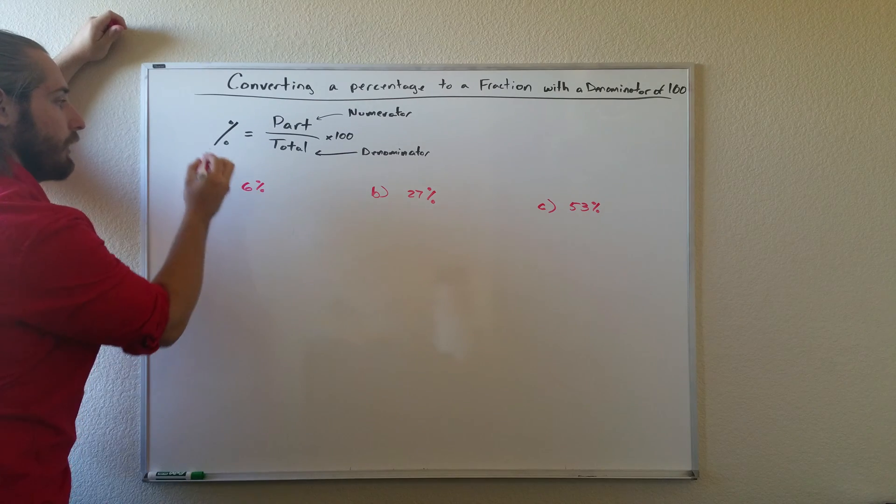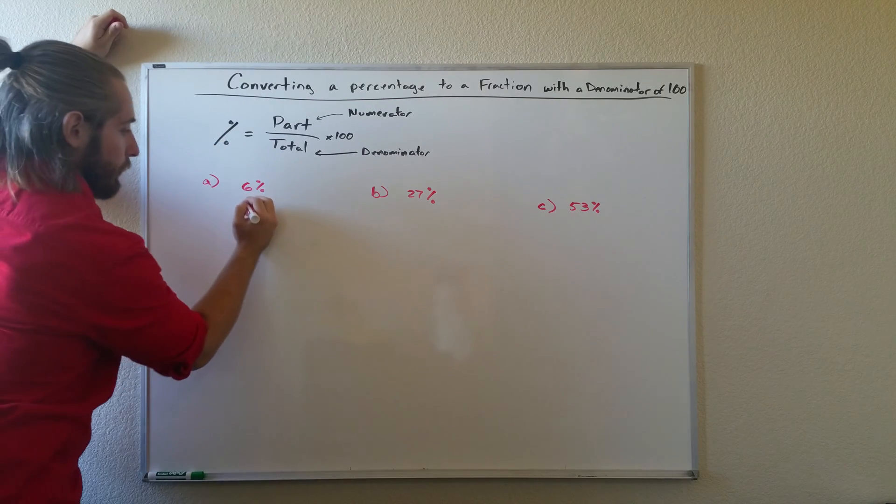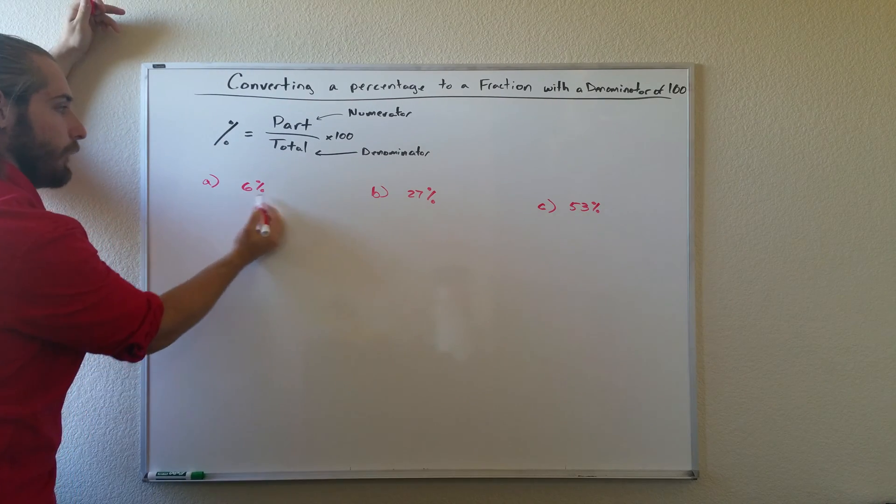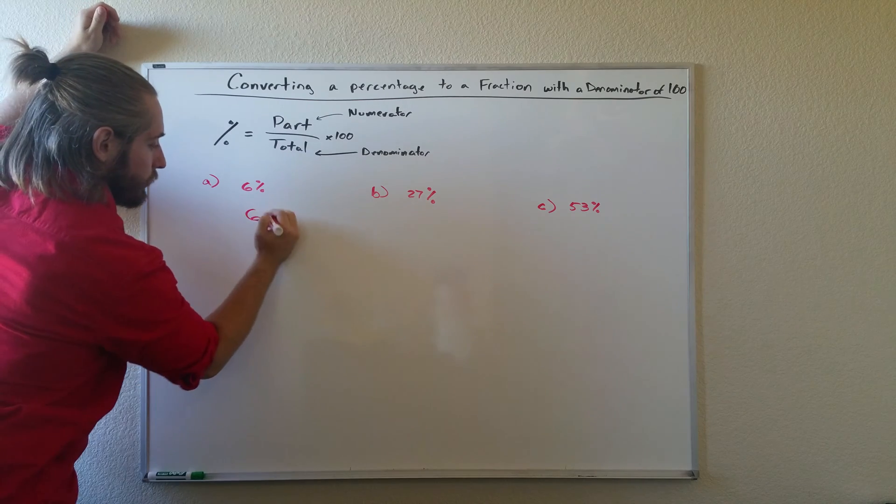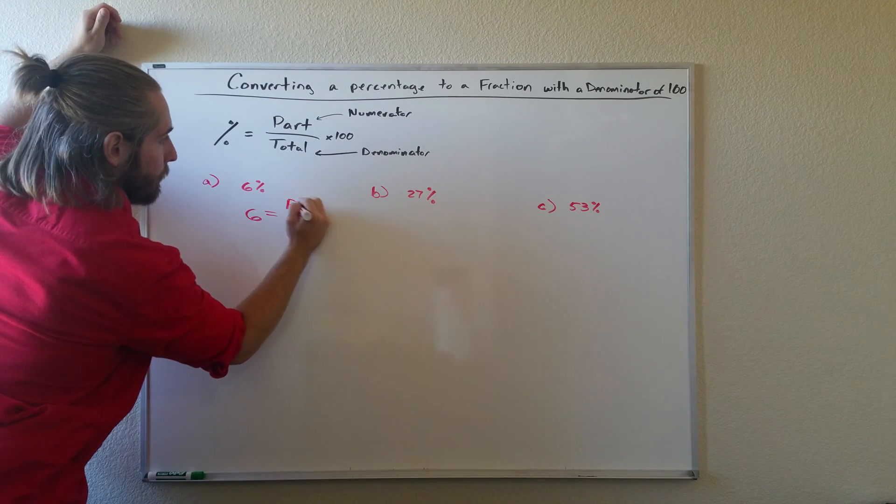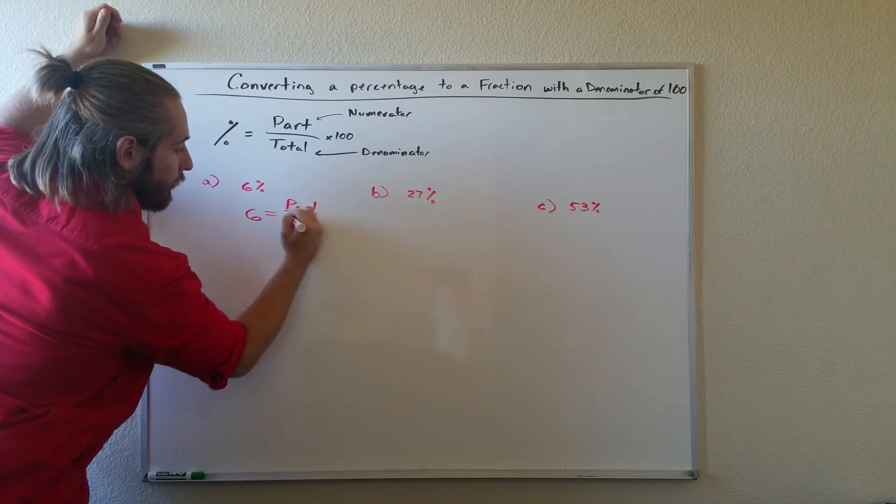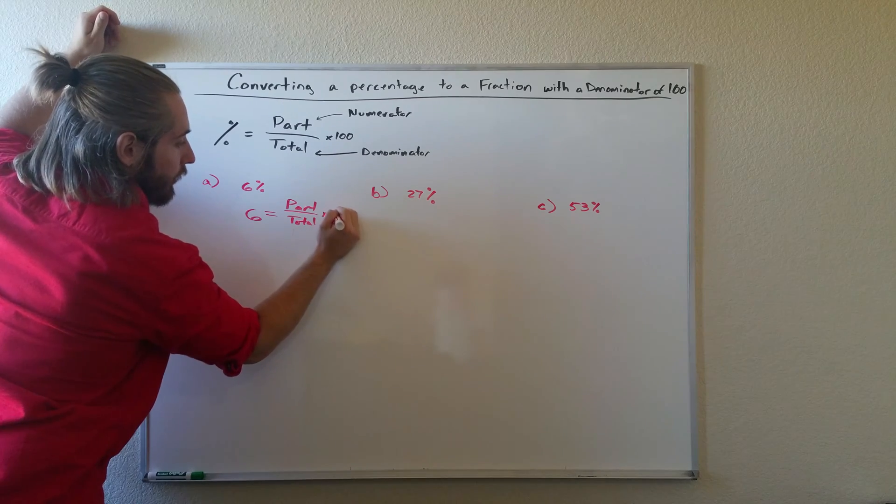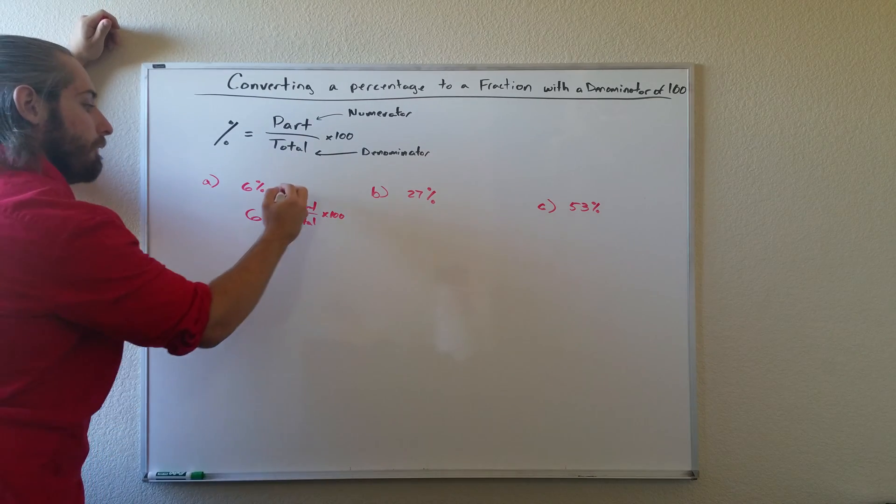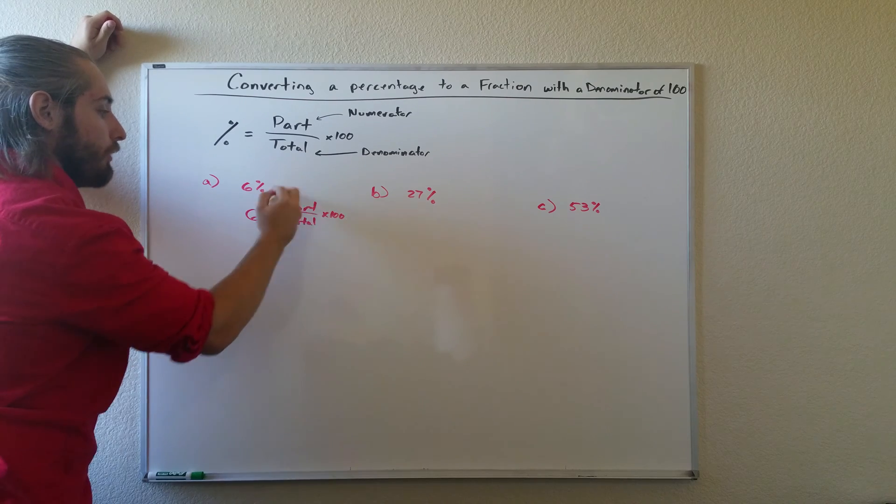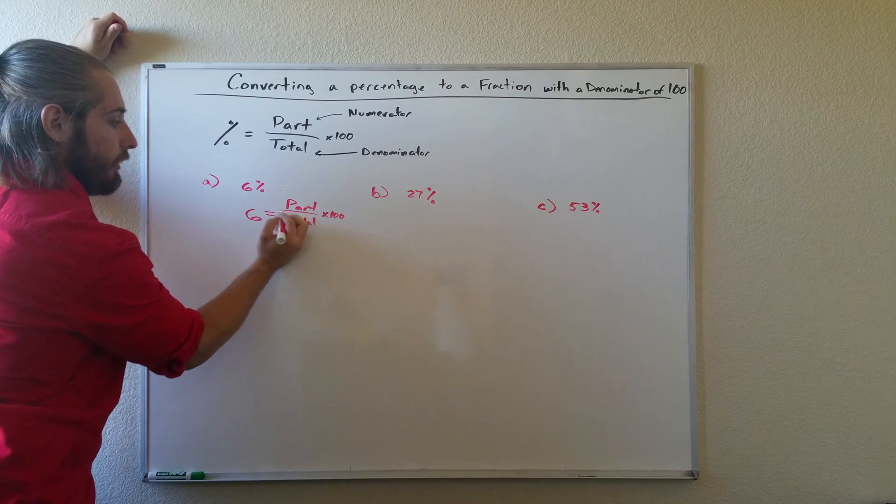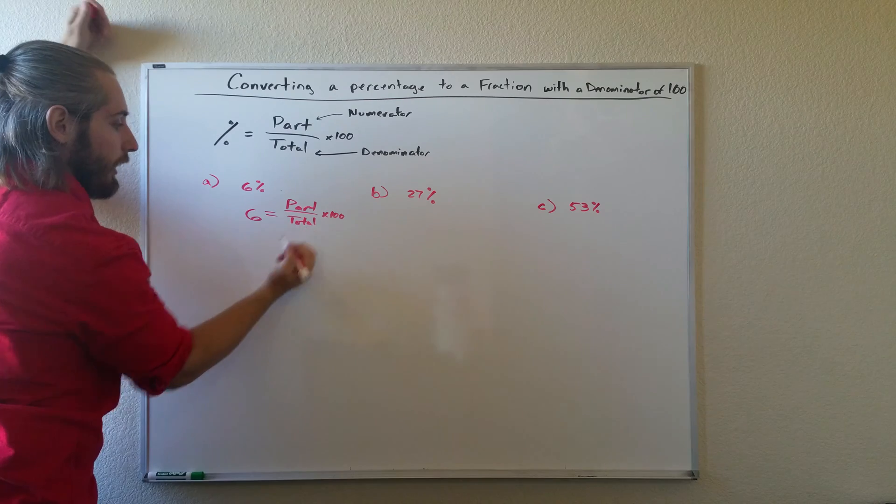In ALEKS it'll give you the percent for these problems, so in this case we have 6%. So all we'll do is set it equal to the part over the total times 100. And what we want to find is actually the part over the total, so we don't have to individually find the part and the total.